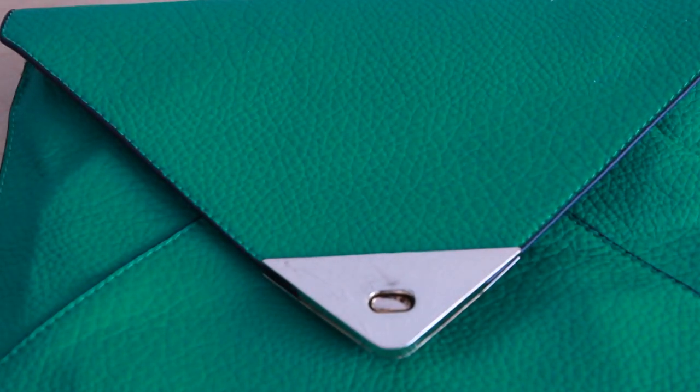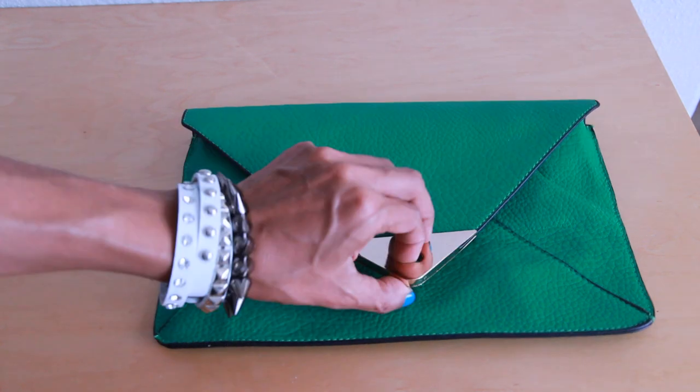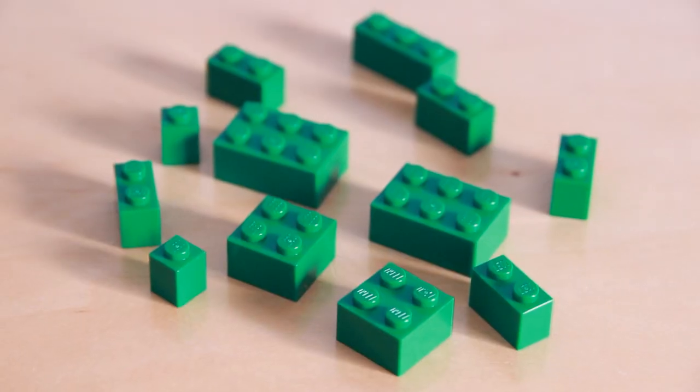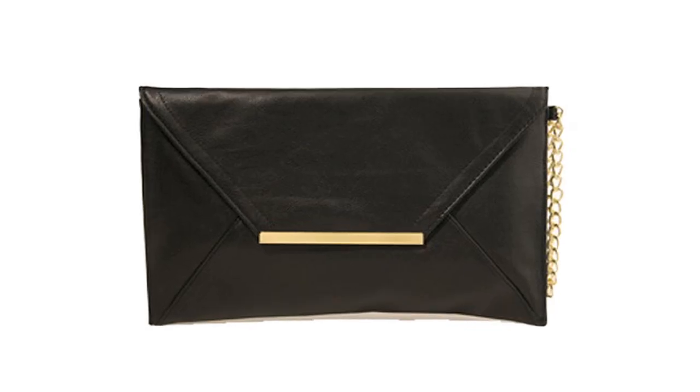First, you'll want to find a handbag with a fold-over flap. This is where you'll create your Lego design. I chose this bright green clutch to match my green Legos, but you can use a neutral colored bag like black or white.